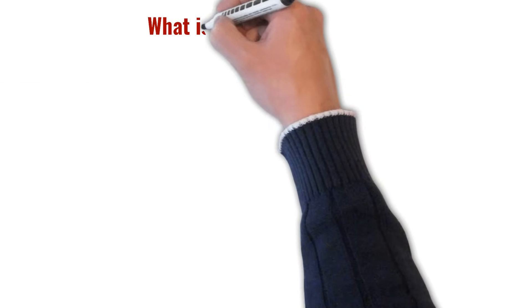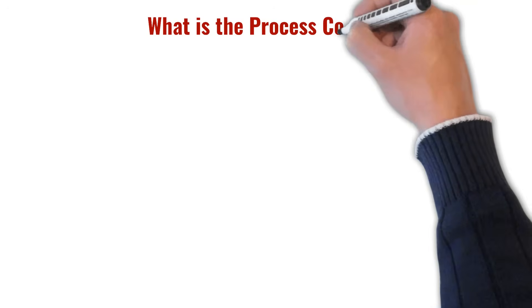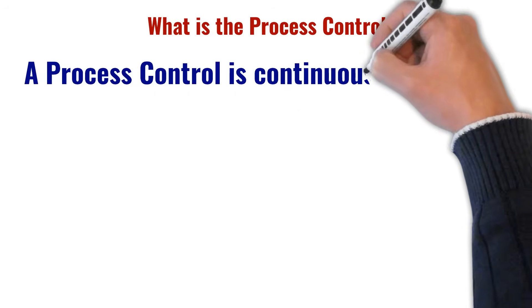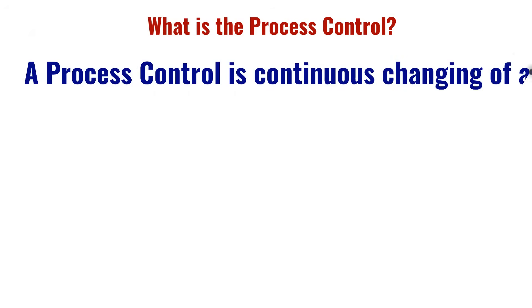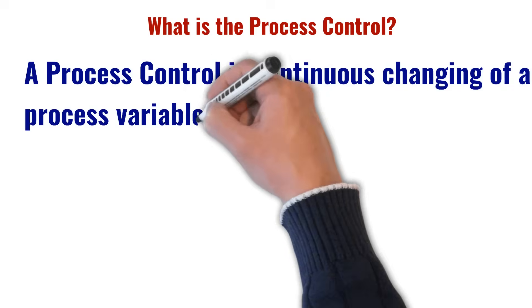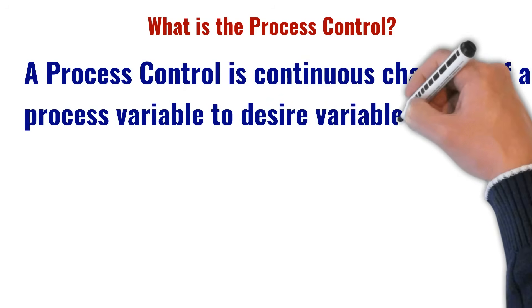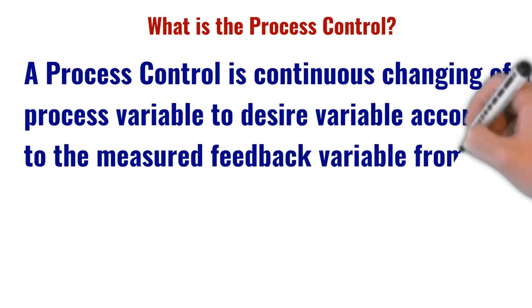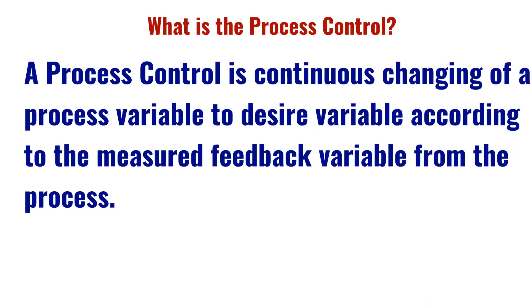The third most frequently asked interview question is: what is process control? Process control is the continuous changing of a process variable to a desired variable according to the measured feedback variable from the process. In other words, process control is a closed-loop control system.